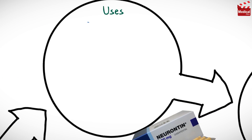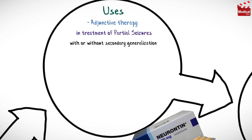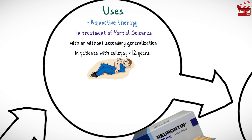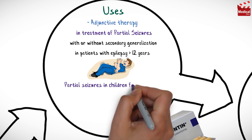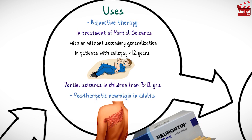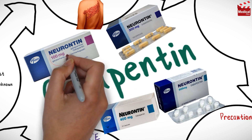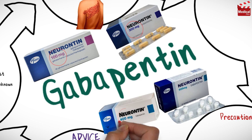Gabapentin is used as an adjunctive therapy in the treatment of partial seizures with or without secondary generalization in patients with epilepsy above 12 years, and as an adjunctive therapy for partial seizures in children from 3 to 12 years. It is also used for adults in the management of postherpetic neuralgia.